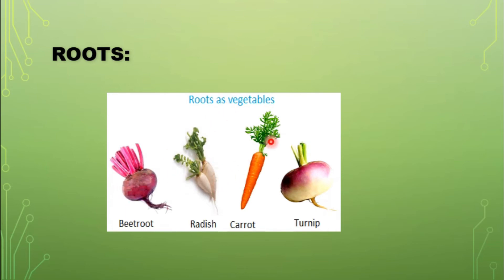Radish, carrot and turnip are roots that we use as food, because they store food prepared by plants.